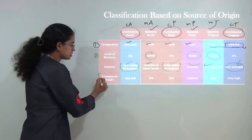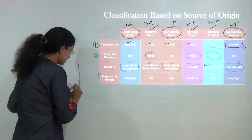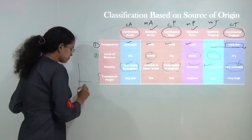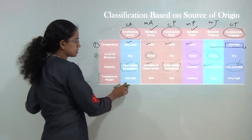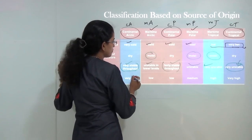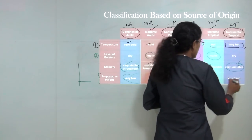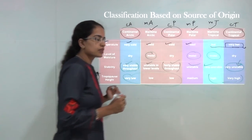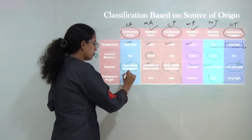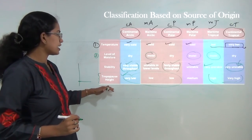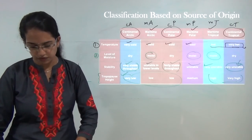The fourth parameter is tropopause height — the upper limit of the troposphere. The height of the tropopause is very low in polar areas. However, in tropical areas the height of the tropopause becomes much higher. That completes the first classification based on source of origin. In tropical maritime regions, convergence from various directions and convection currents are commonly present.